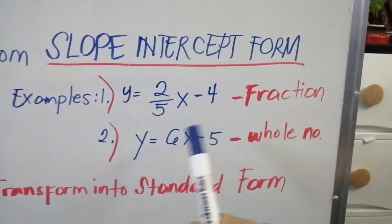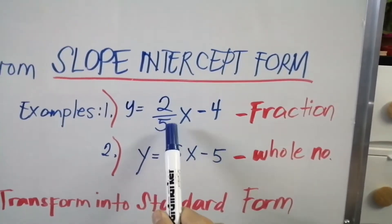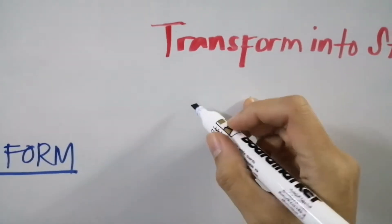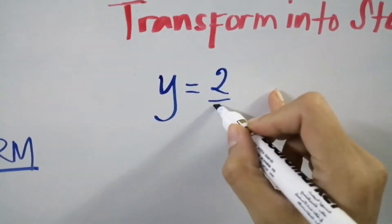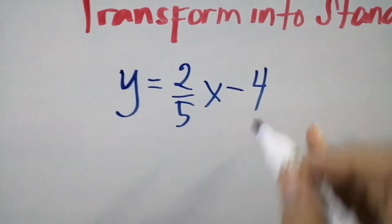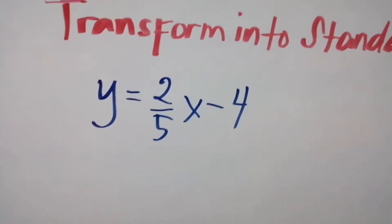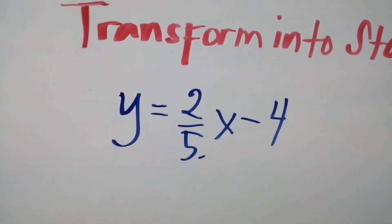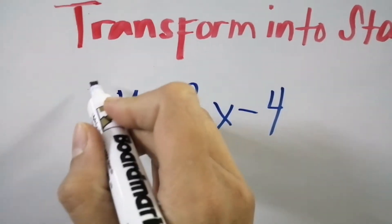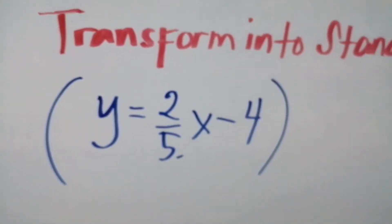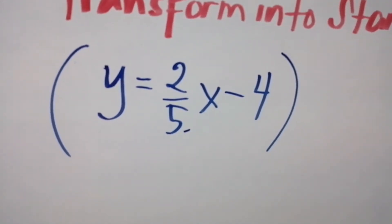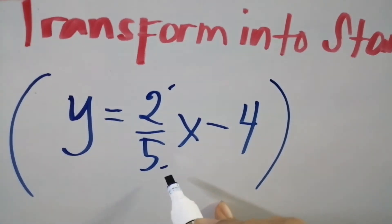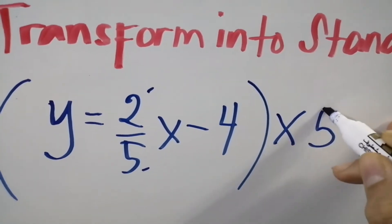This is the step for solving a fraction form slope-intercept form. For example, you are given the equation y equals 2/5x minus 4. What shall we do first? We are going to find our denominator, which is positive 5. Positive 5 will be our factor. Here, 2 is our numerator and 5 is our denominator, so multiply by the denominator positive 5.